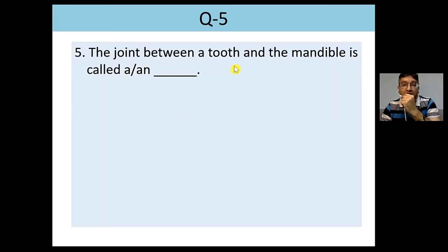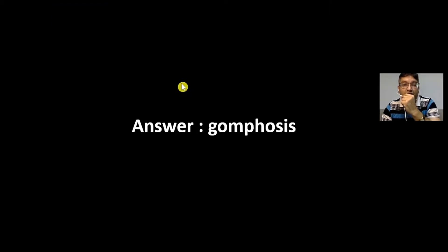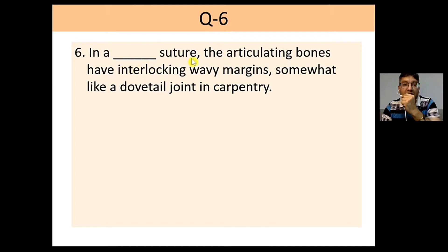The joint between a tooth and the mandible is called gomphosis. In a serrate suture, the articulating bones have interlocking wavy margins, somewhat like a dovetail joint in carpentry.